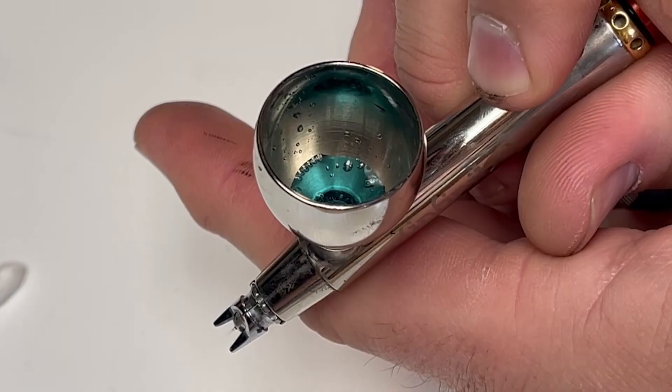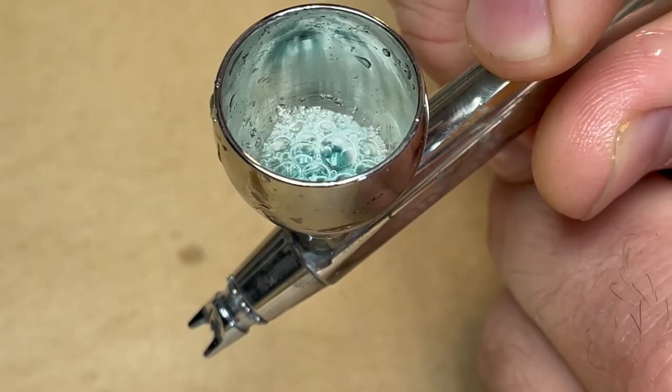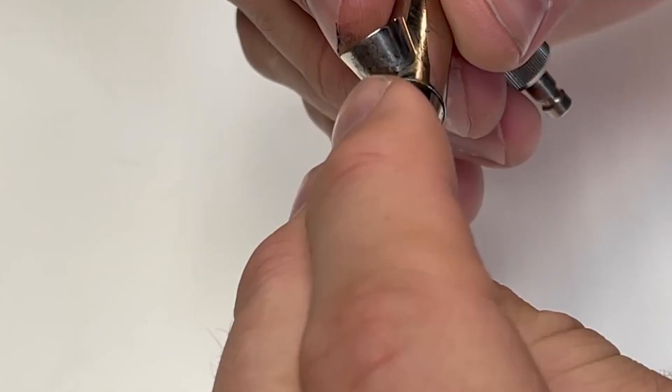Once you put your airbrush back together it should work just fine, but in some cases, even after cleaning and oiling, it might be backflowing.